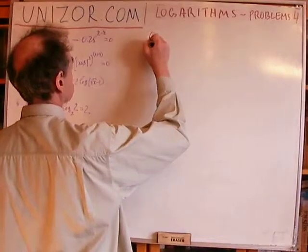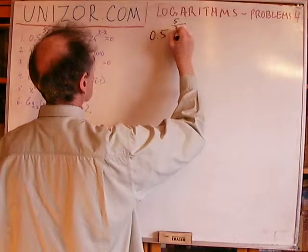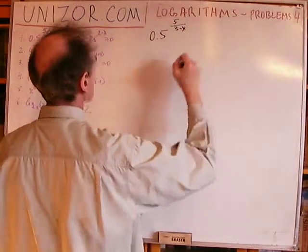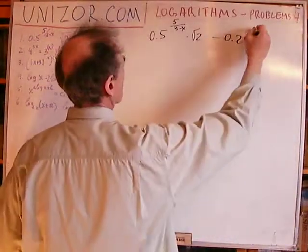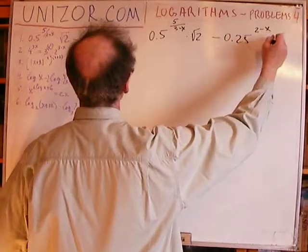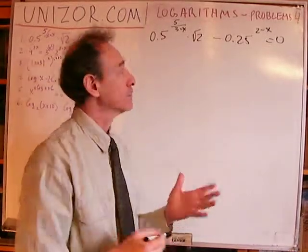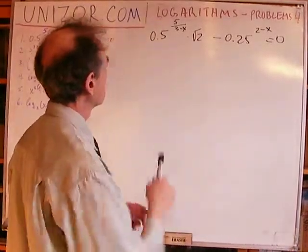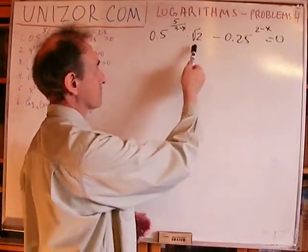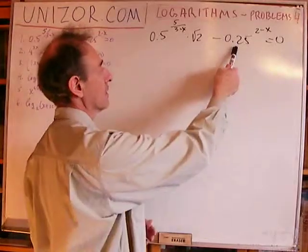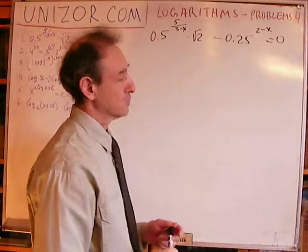Problem number one: 0.5 to the power of (5 over (3 minus x)) times square root of 2 minus 0.25 to the power of (2 minus x) equals 0. What you really have to notice here is that 0.5 is one half — related to number 2. Square root of 2 is also related. And 0.25 is one quarter, which is also related to number 2.